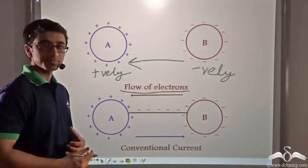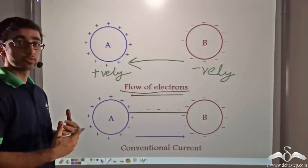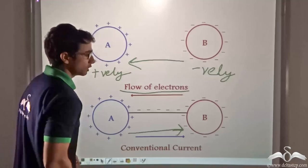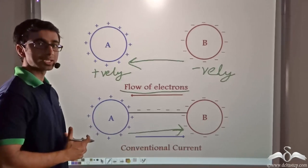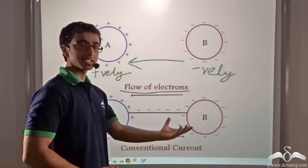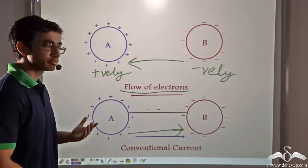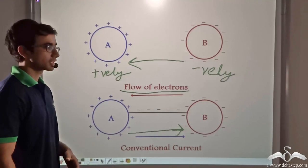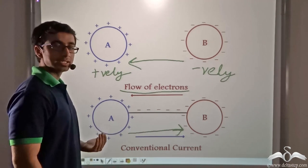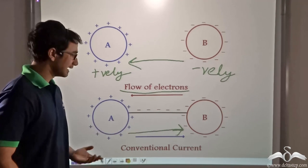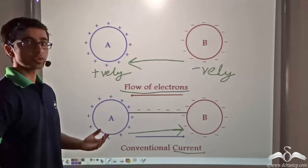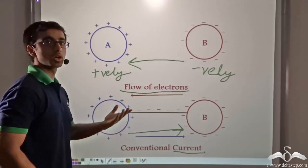Conventionally, the flow of current is considered in the opposite direction. The negative body is at a low potential and the positive body is at a higher potential. So electrons flow from the negatively charged body to the positively charged body, that is from low to high potential, and conventional current flows from high potential to low potential.